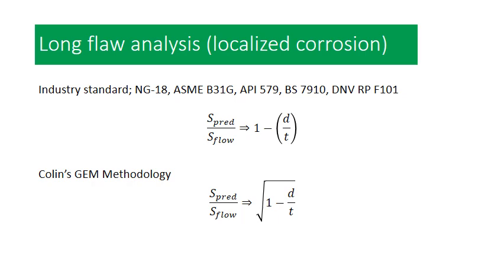Over the last three or four years I've been working on my own methodology, which I call the GEM methodology, and in this I predict that the remaining strength of a localized corrosion flaw will actually tend towards the square root of the remaining ligament. Now this goes against common sense but there actually is a theoretical rationalization behind it. I'd just like to clarify this is for localized corrosion and specifically I'm looking at long flaw analysis — I'm looking at the limits of the mathematics.